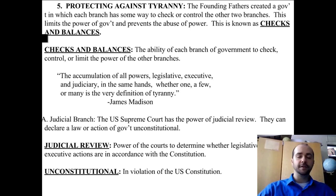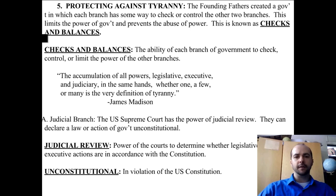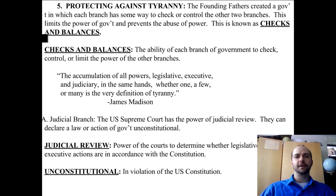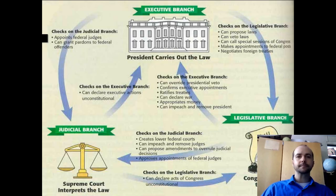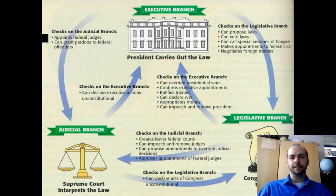If both Congress and the president pass a bad, tyrannical law, the Supreme Court has the power to cancel that law. The judicial branch has the power of judicial review — they can declare a law or act of government unconstitutional, meaning in violation of the U.S. Constitution. We're going to spend quite a bit of time on checks and balances, where one branch has the power to stop the other two from doing bad things, and all three branches have to work together to get anything done.